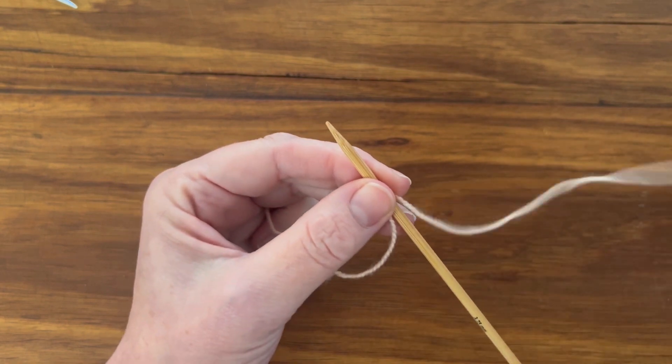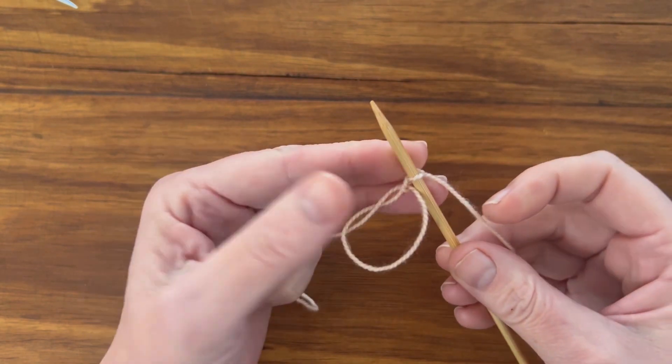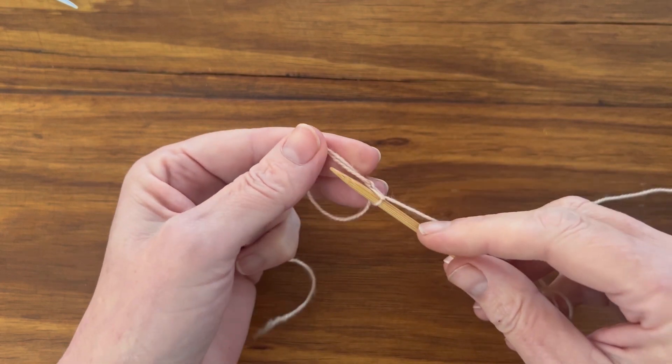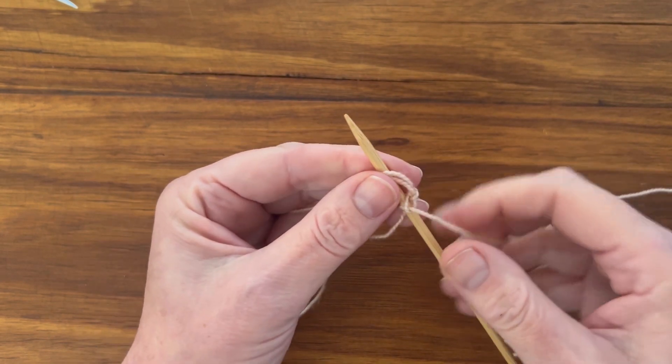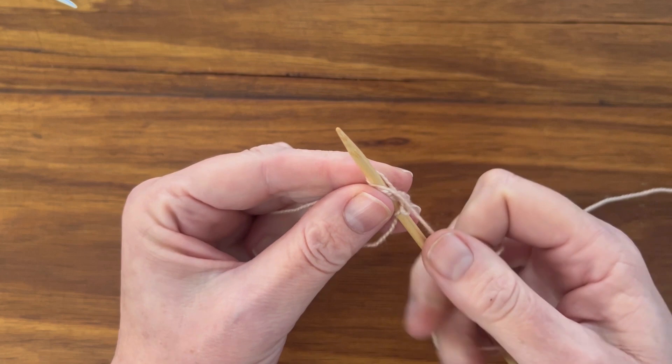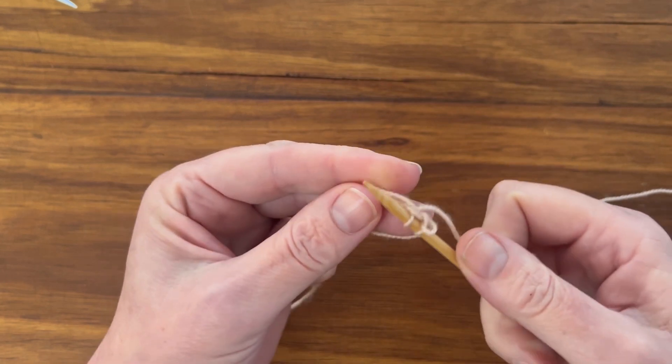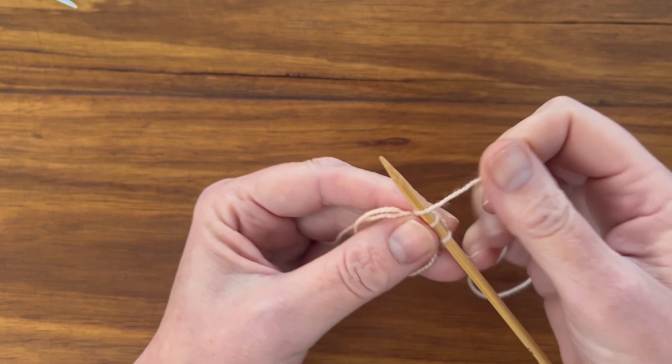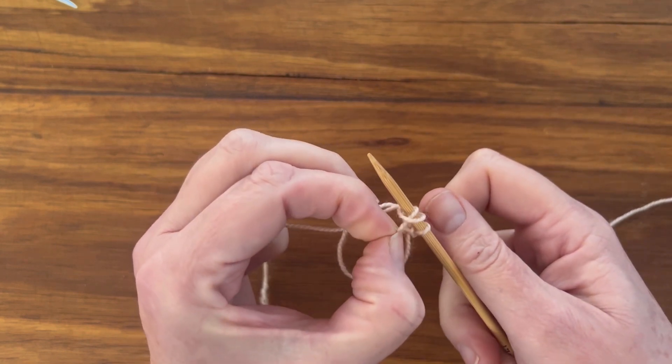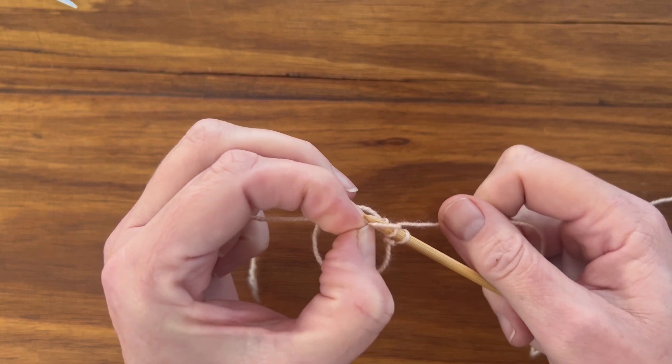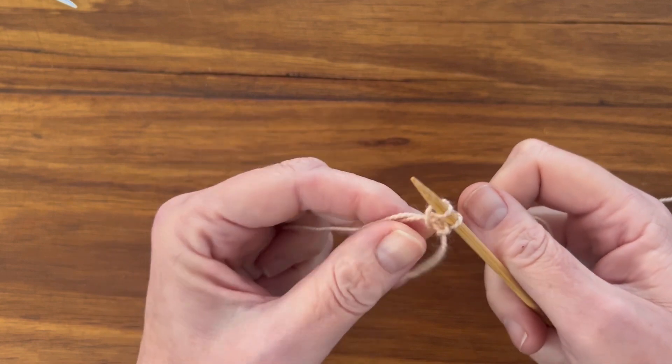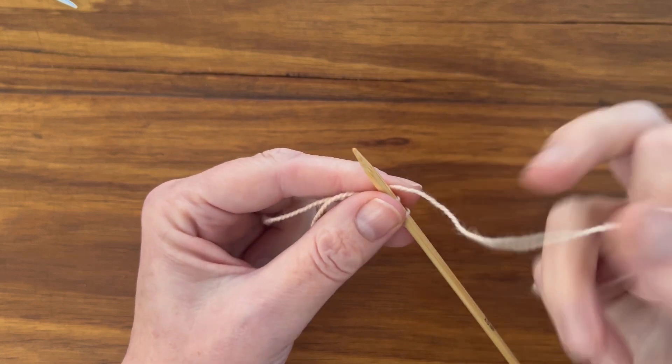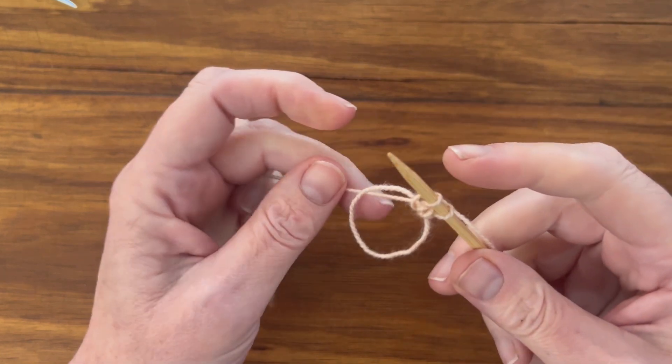So you'll repeat that for the number of stitches you need to cast on. Again insert the needle through the loop. Yarn over. Pull that loop through. Another yarn over. And this time you'll pull the just worked stitch over that yarn over. And have two stitches on the needle. So you'll just continue this process the number of times needed.